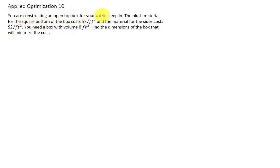You are constructing an open-top box for your cat to sleep in. The plush material for the square bottom of the box costs $7 per square foot and the material for the sides costs $2 per square foot. You need a box with volume 8 cubic feet. Find the dimensions of the box that will minimize your cost.